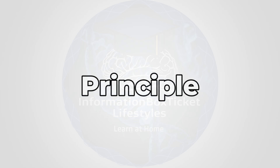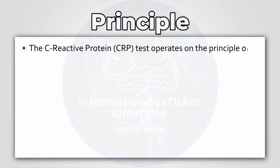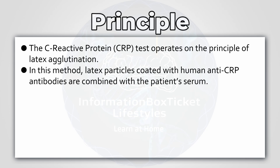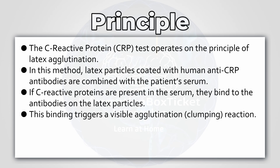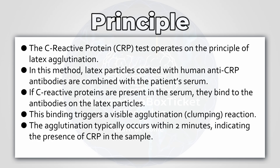Principle of C-Reactive Protein Test. The C-Reactive Protein test operates on the principle of latex agglutination. In this method, latex particles coated with human anti-C-reactive protein antibodies are combined with the patient's serum. If C-reactive proteins are present in the serum, they bind to the antibodies on the latex particles. This binding triggers a visible agglutination, or clumping reaction. The agglutination typically occurs within two minutes, indicating the presence of C-reactive protein in the sample.